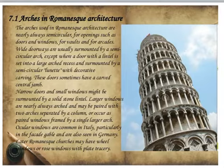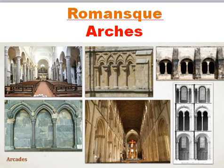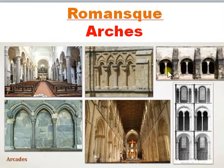Windows may be paired with two openings separated by a column, or occur as paired windows framed by a single larger arch. Circular windows are common in Italy, particularly in facade gables, and are also seen in Germany. Later Romanesque churches may have wheel windows or rose windows with plate tracery.